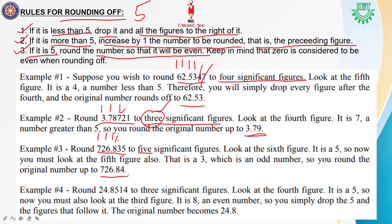3 plus 1 is 4. Now let's see another example: 24.8514 rounded to 3 significant figures. 2 and 4 will remain. In the third position, the value depends on the fourth number. The fourth number is 5. If we remove 5, the preceding digit is 8. Since 8 is an even number, there is no need to add or subtract — the final answer stays the same. So 24.8 is my answer. These are the rules for rounding off.